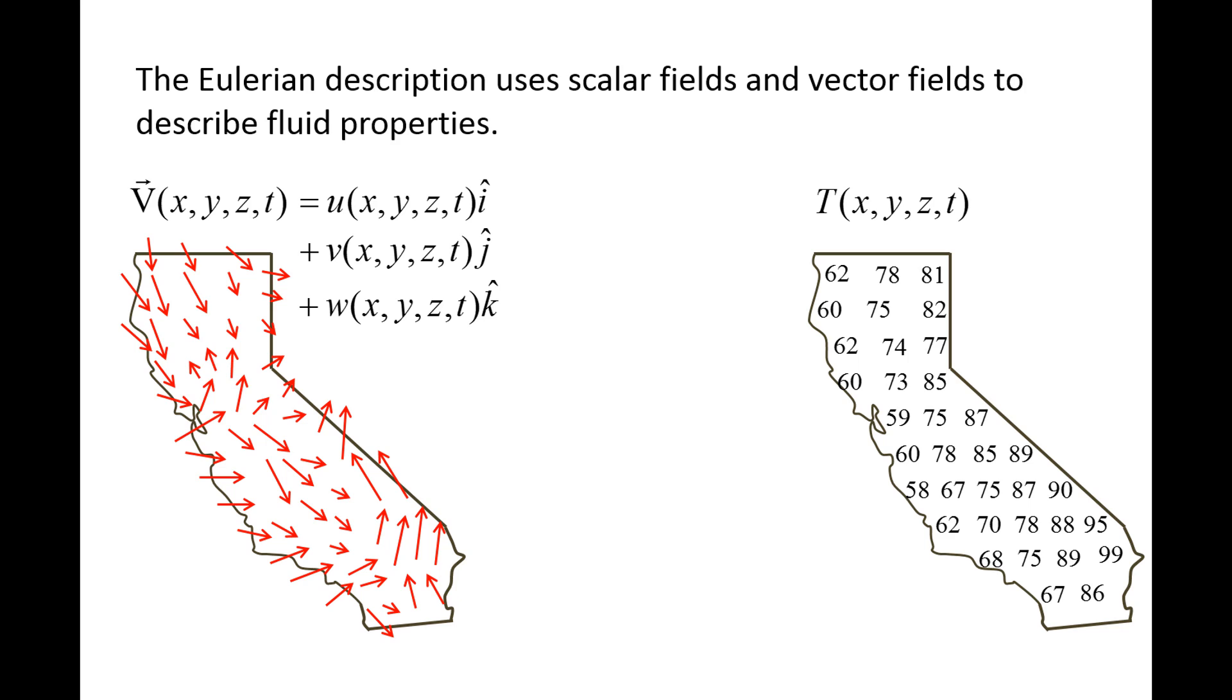Notice that in the Eulerian point of view, the coordinates x, y, z, and t are all independent of each other.